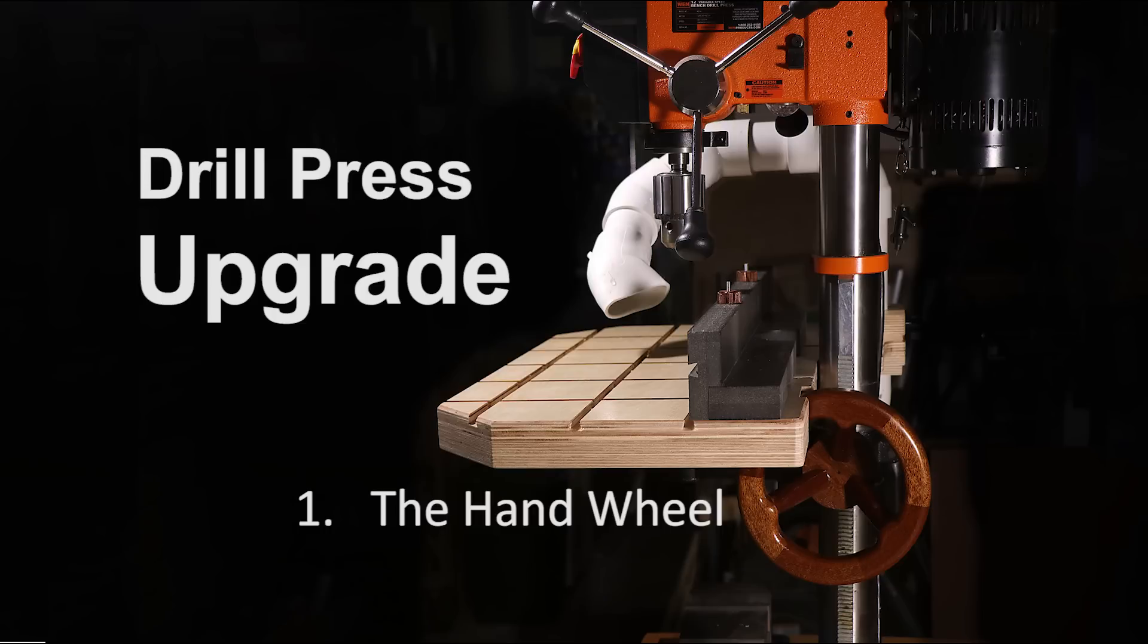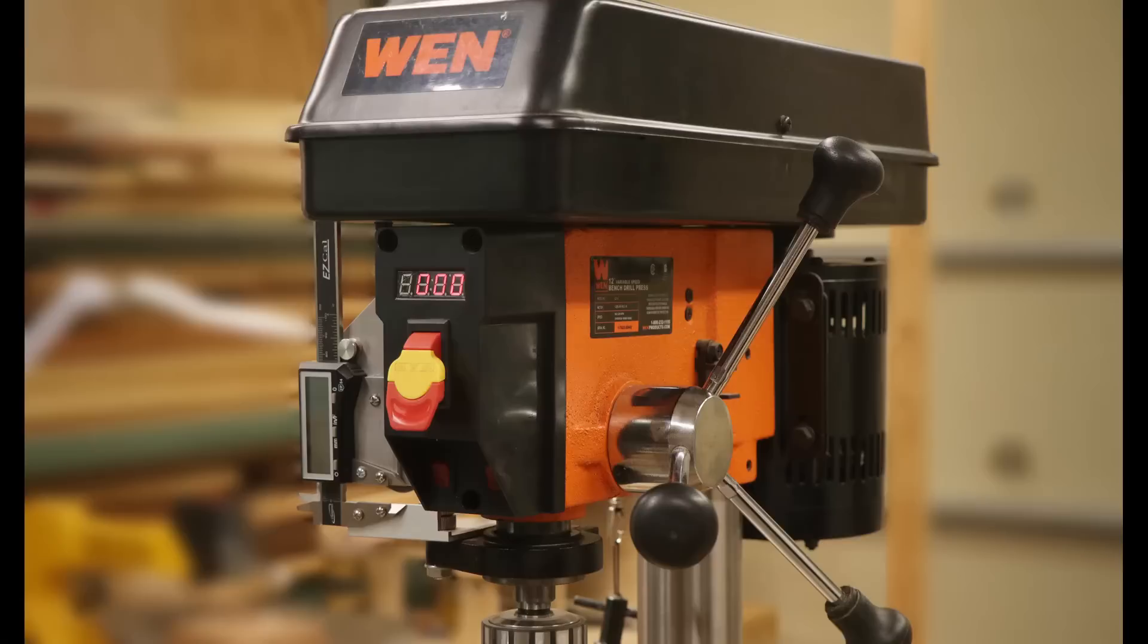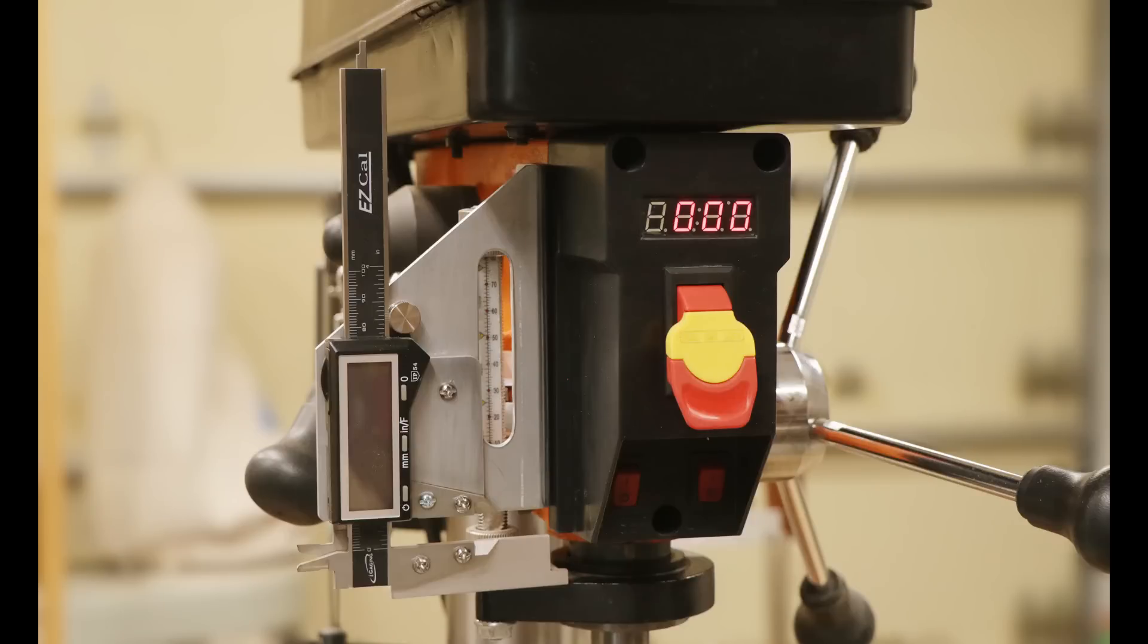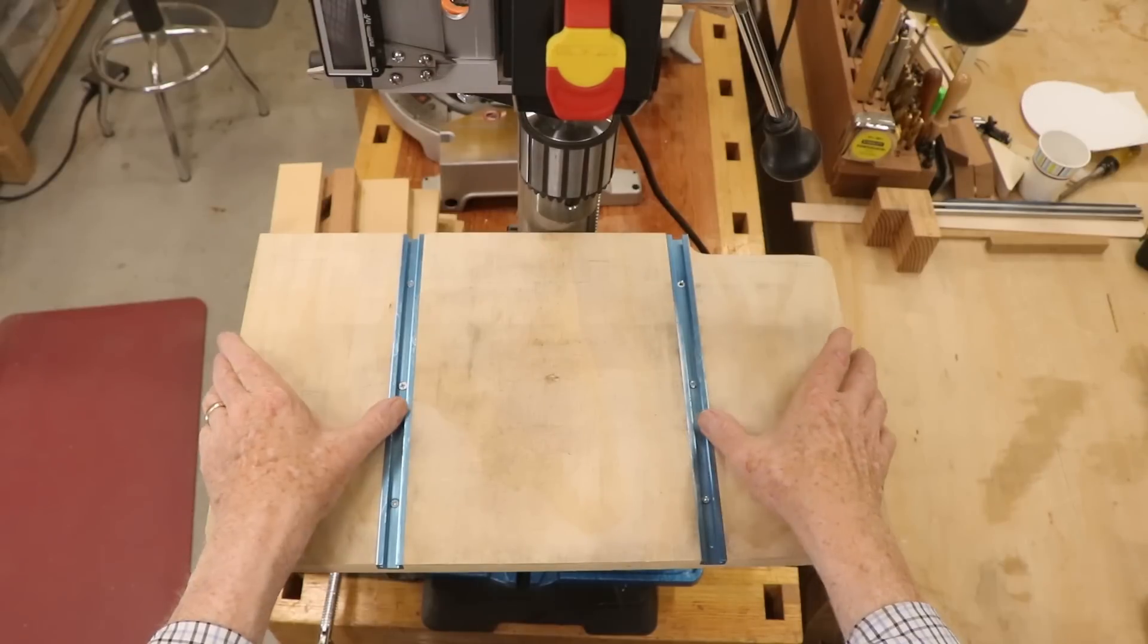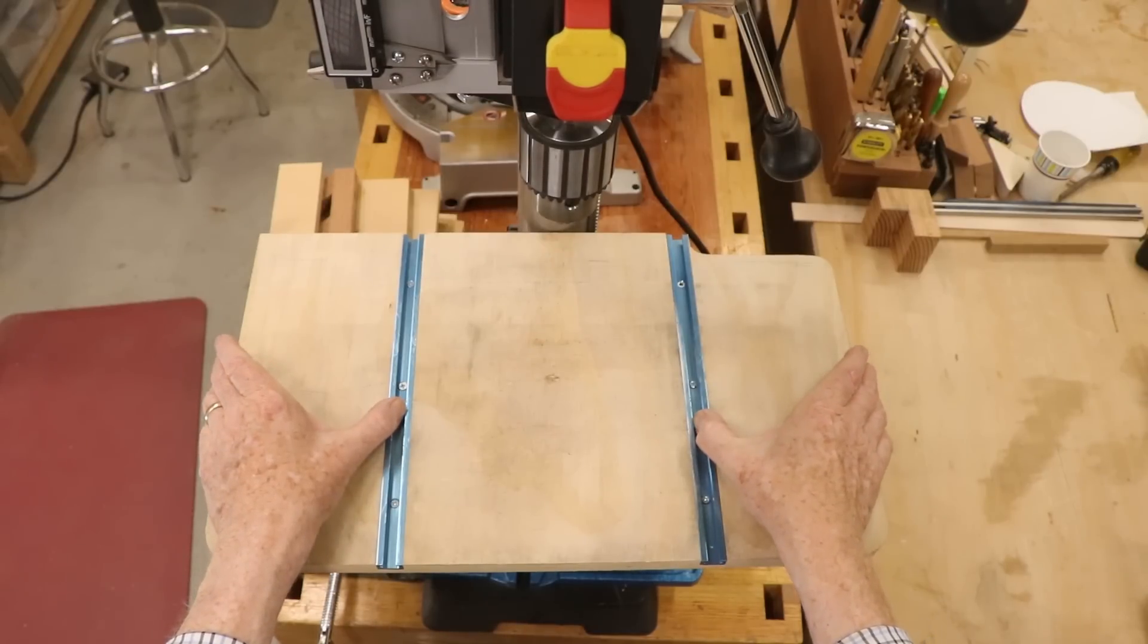Recently I made a decision to add some new or improved features to my bare bones economy priced drill press. You may have seen my earlier video on adding a digital depth gauge. It currently has a small auxiliary table that I built soon after buying the machine. I want to improve and enlarge that table to enable several new features which I will get to in a future video.